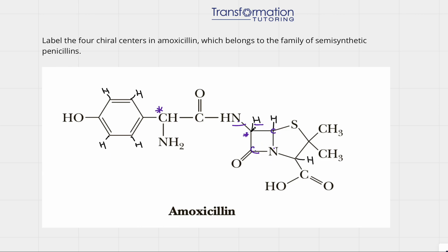Let's go over why it is a chiral center, because it's a little trickier. This carbon is connected to hydrogen and nitrogen — those two are different. Then this carbon going one way in the ring is connected to sulfur and nitrogen, while this carbon going the other way is connected to the double bond O and nitrogen. So going this way and this way is different — therefore this carbon is a chiral center.